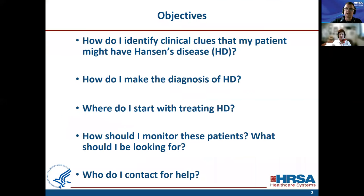Thank you, Scott. Today's objectives: we're going to discuss how to identify clinical clues that your patient may have Hansen's disease, how to make a diagnosis, what to tell the patient because he or she will come with many questions. Where do I start treatment? Should I refer patients to infectious disease or can I treat patients myself? What and how should I monitor my patients? If I don't know what to do, how and who can I contact for help?